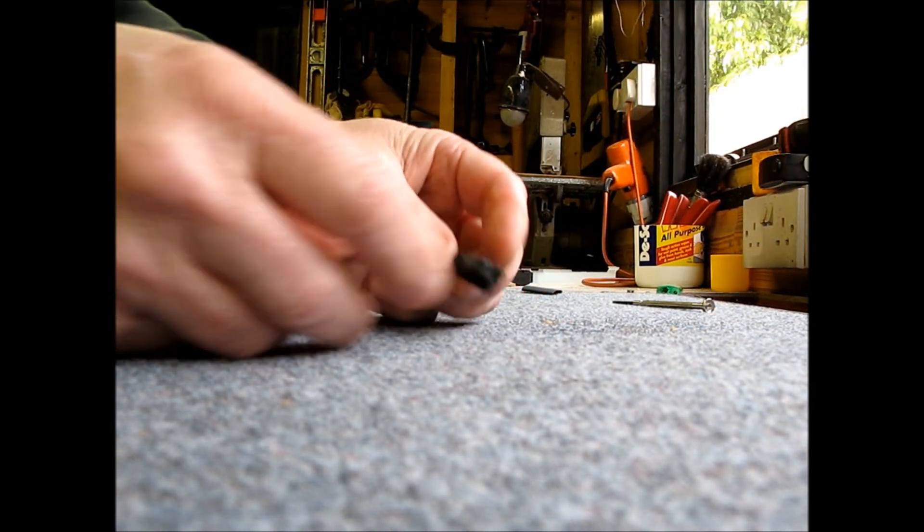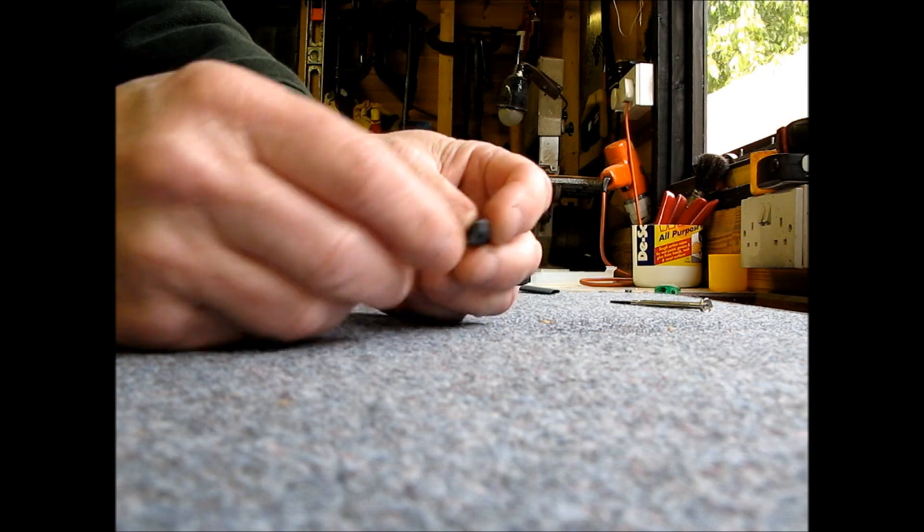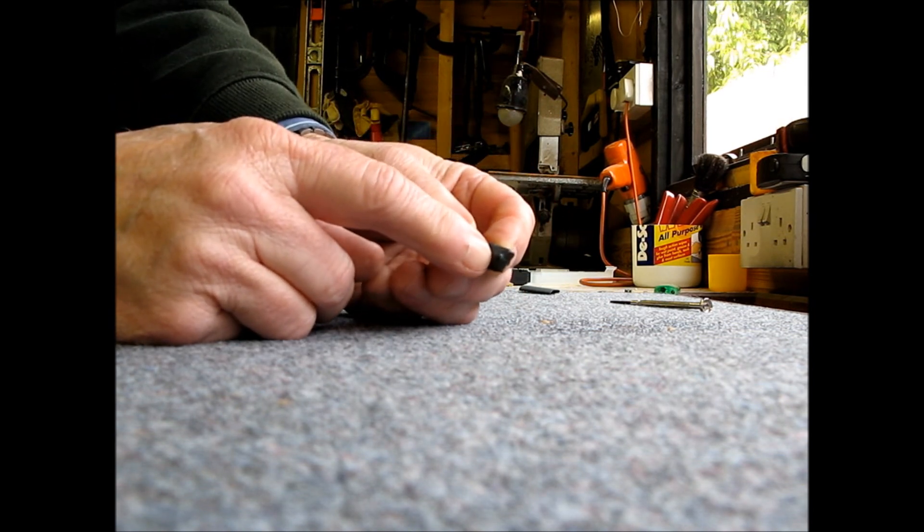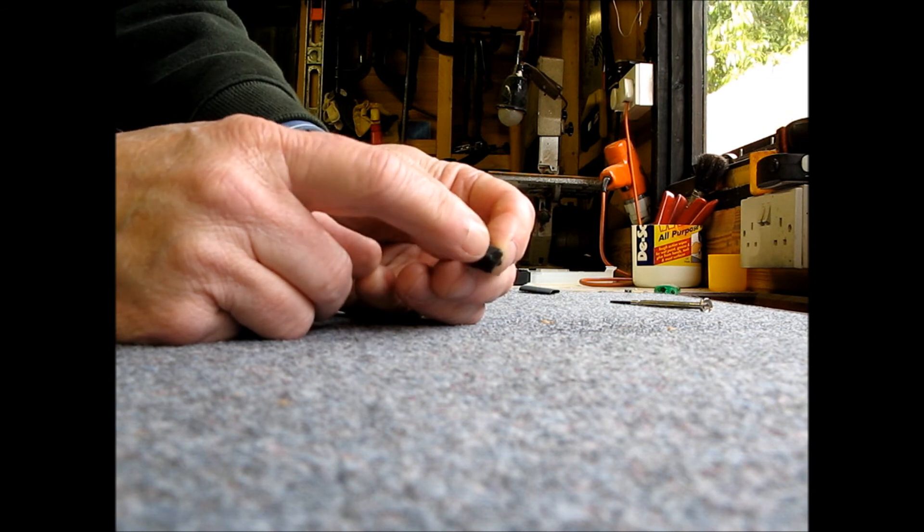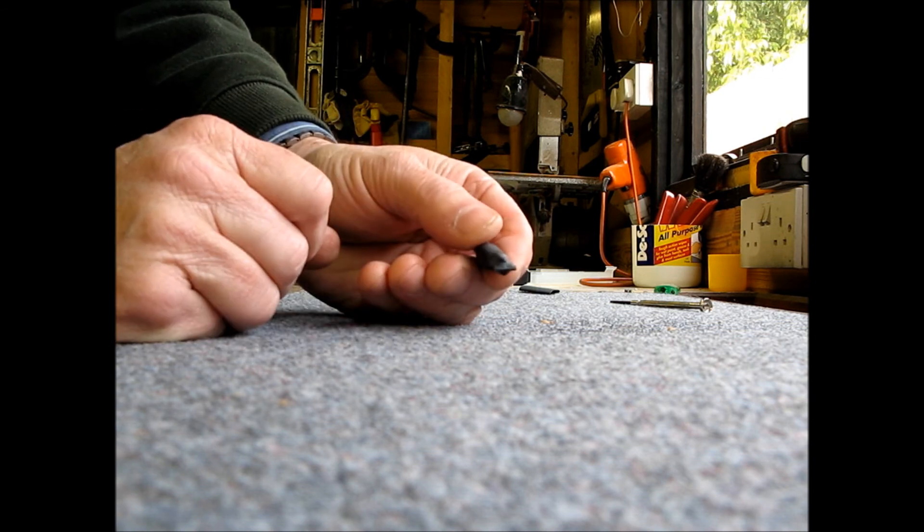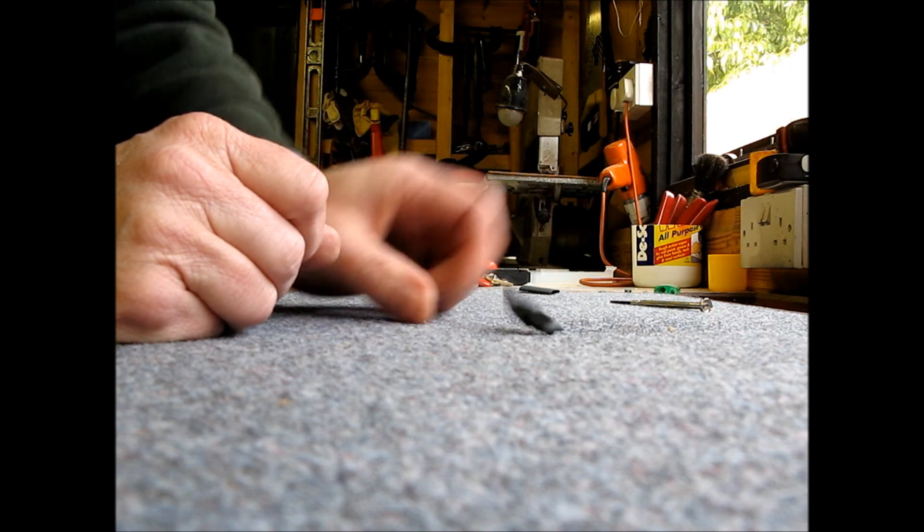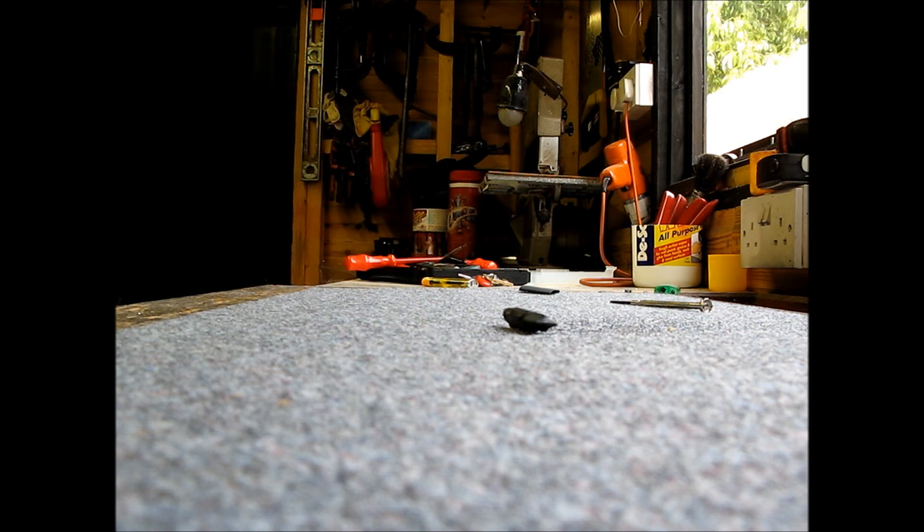And of course the other thing you can do if you really want to make a fancy keyring out of it. Because that's a plastic strong in there. If you just drill that with a sixteenth drill just right the way through and just put a little keyring thing on it, you can put it on your keys. It's sorted. I'll catch you later. Okay, see you next.